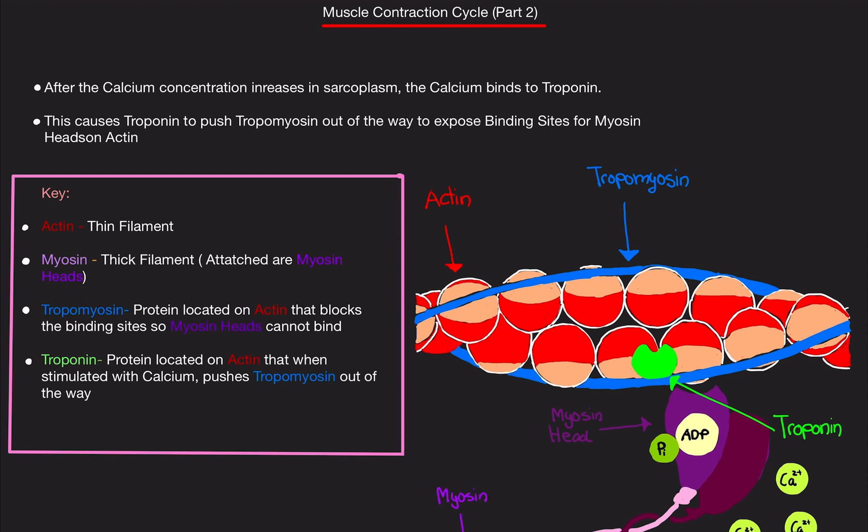The calcium is going to the sarcoplasm — the cytoplasm is called sarcoplasm because it's a muscle cell. So the calcium concentration is high, and calcium binds to something called troponin.